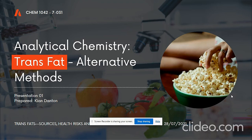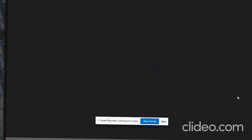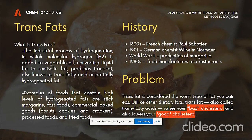Let's define what trans fat means. Trans fat is the result of the industrial process of hydrogenation, in which molecular hydrogen is added to vegetable oil, converting liquid fat to semi-solid fat, also known as trans fatty acids or partially hydrogenated fat. Examples of food that contain high levels of hydrogenated fat are stick margarines, fast foods, commercial baked goods such as donuts, cookies and crackers, processed food, and fried foods.